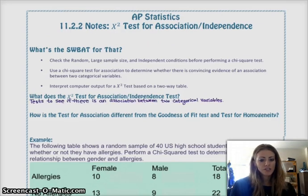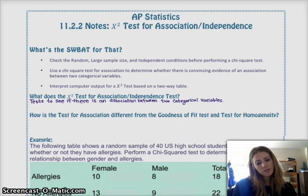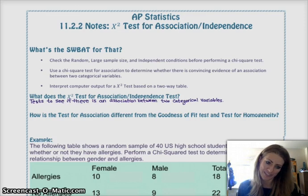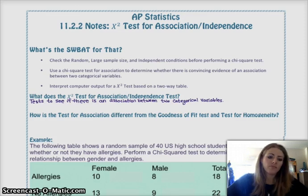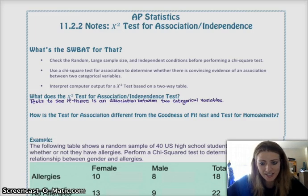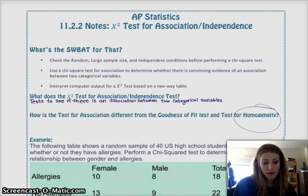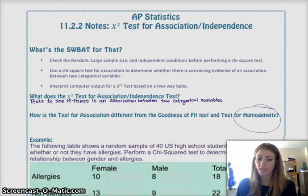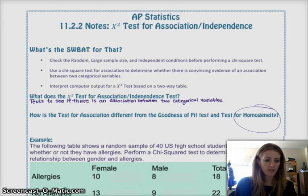Second question is, how is this test, the test for association, different from the goodness of fit test and the test for homogeneity? So, the difference between this and the goodness of fit is very similar to how the homogeneity and the goodness of fit test are different. Basically, goodness of fit is strictly for one variable, one population, and you're just testing to see if the sample fits the claim of the distribution of the data.